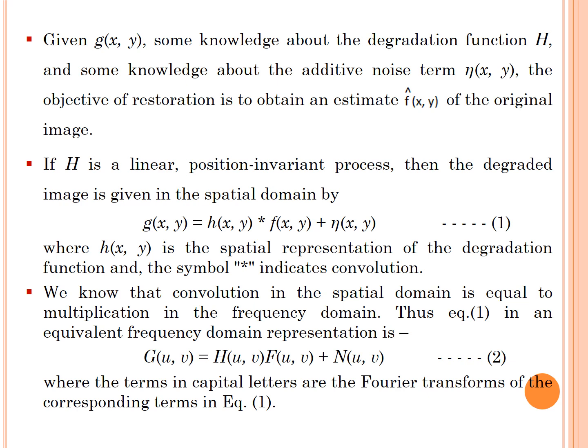If H is a linear position-invariant process, then the degraded image is given in the spatial domain by g(x,y) = h(x,y) * f(x,y) + η(x,y), where h(x,y) is the spatial representation of the degradation function and the symbol asterisk indicates convolution. We know that convolution in the spatial domain is equal to multiplication in the frequency domain. Thus equation 1 in an equivalent frequency domain representation is G(u,v) = H(u,v)F(u,v) + N(u,v), where the terms in capital letters are Fourier transforms of the corresponding terms in equation 1.